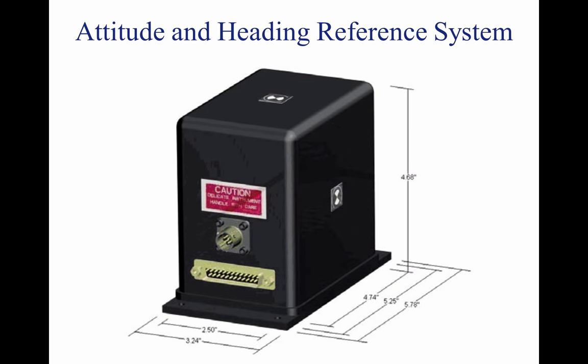Electronic flight displays have replaced free-spinning gyros with solid-state laser systems that are capable of flight at any attitude without tumbling. This capability is the result of development of the attitude and heading reference system (AHRS). The AHRS sends attitude information to the PFD in order to generate the pitch and bank information of the attitude indicator. The heading information is derived from a magnetometer which senses the Earth's lines of magnetic flux, and this information is then processed and sent out to the PFD to generate the heading display.